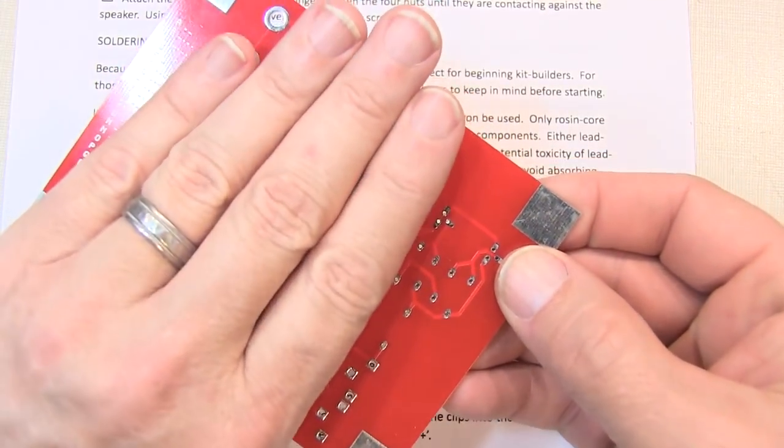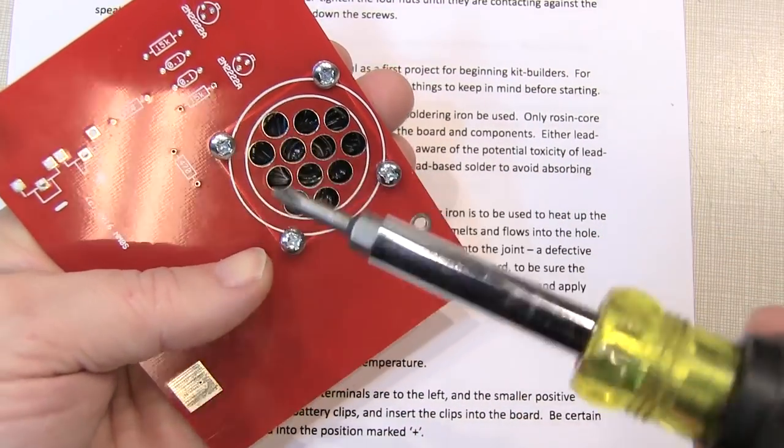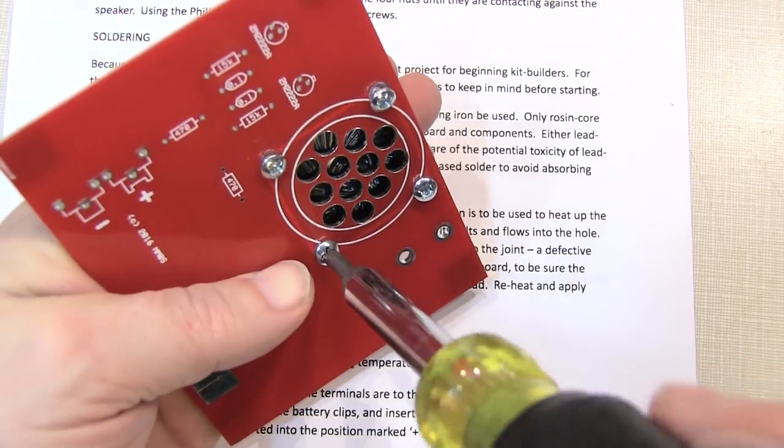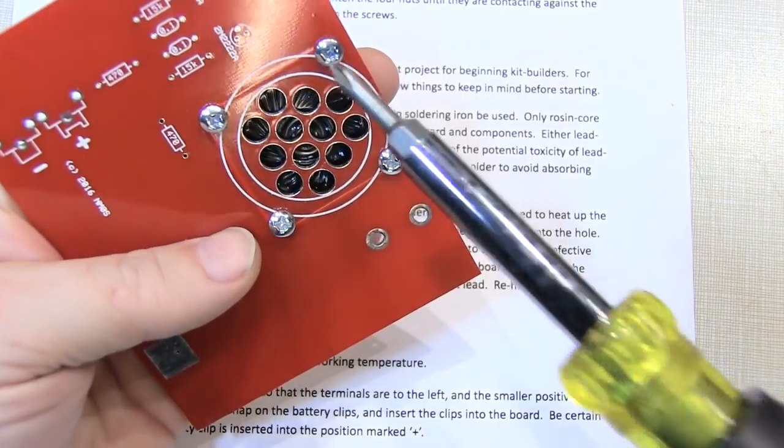You can then put your hand over those four nuts, flip the board back over, and use the Phillips head screwdriver to snug up the screws. And just a quick tip here, don't make the screws too tight because you don't want to bend the speaker.